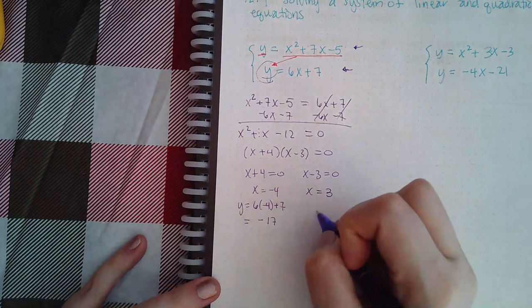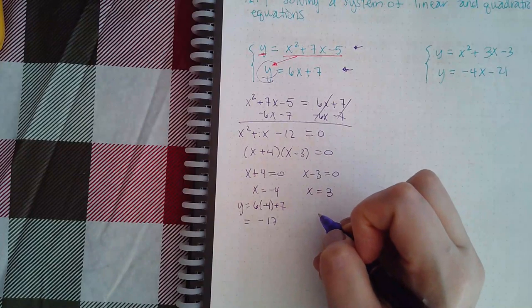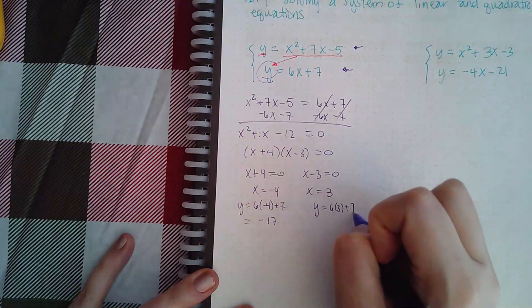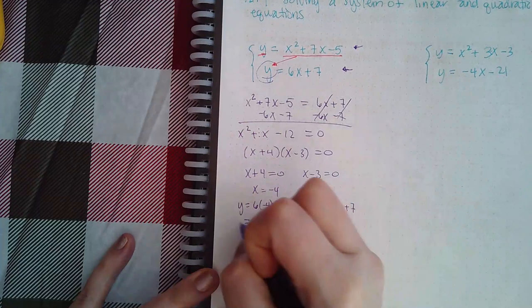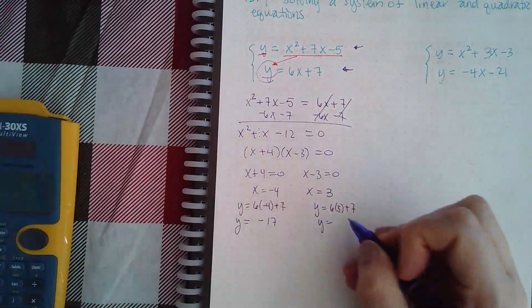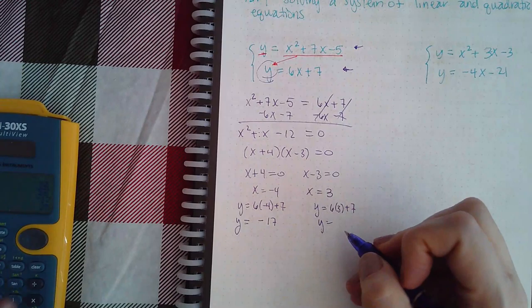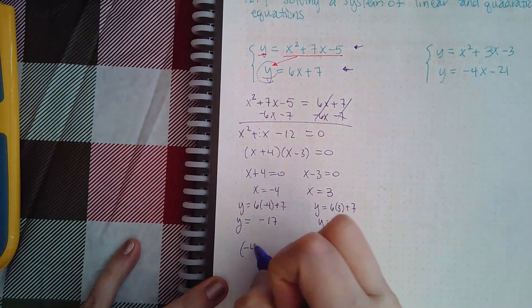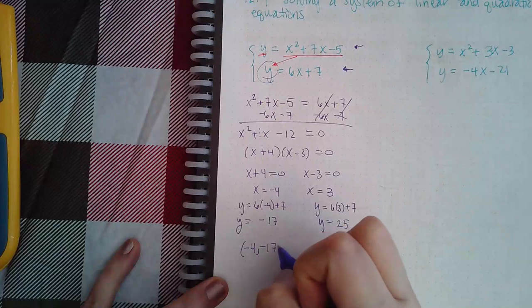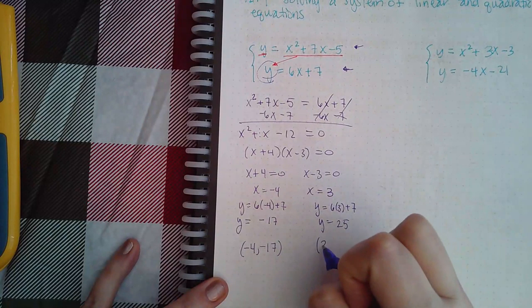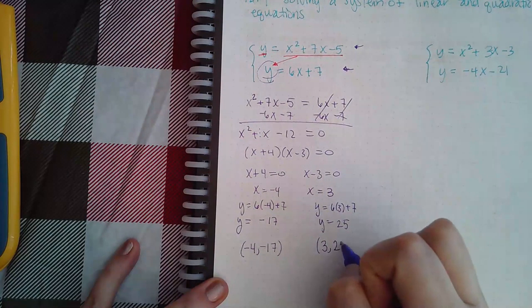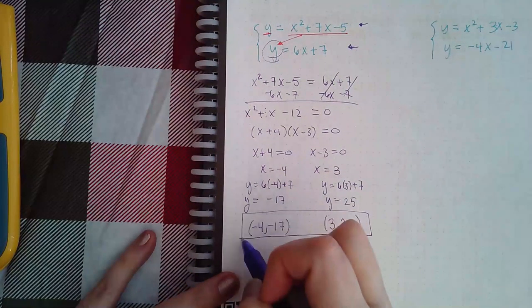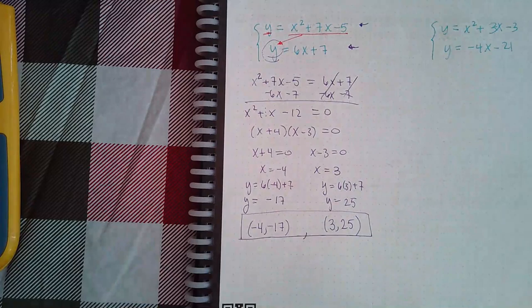Over here I get 18+7, which is 25. So I have two points as my answer: negative 4, which gave me a -17 y value, and 3 for x, which gave me a 25 for y. These two things are my solution, and you just separate them with a comma.